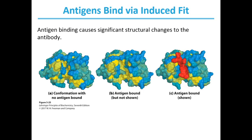Comparing panels A and C, you can see significant structural changes upon antigen binding. Because the antigen is shown in red in panel C, it is easier to compare A and B — panel B shows the same structure as C but without the red antigen coloring. Comparing A and B clearly reveals significant conformational changes upon binding. The bottom line is that there is induced fit when an antibody binds to an antigen.